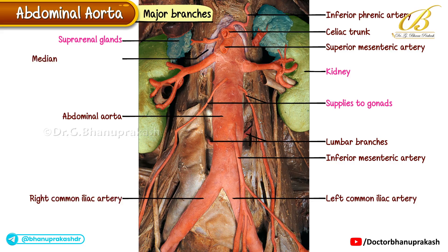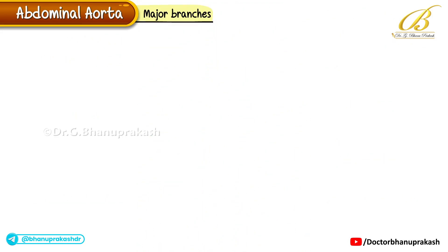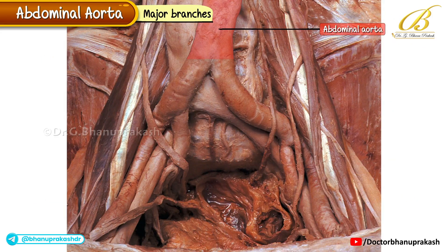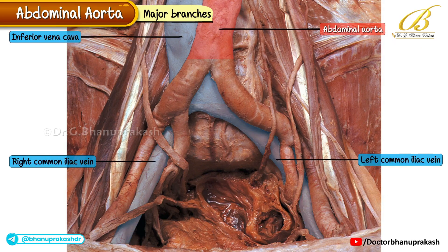In the superior part of the right side of the aorta, the median arcuate ligament is also visible. To the right of the aorta lies the inferior vena cava, formed by the union of the right and left common iliac veins. Posterior to these vessels lies the psoas major muscle.